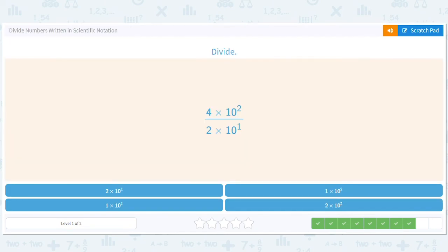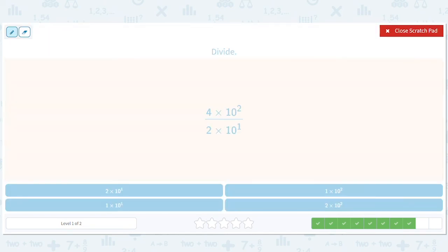All right, how about this guy or gal? This is a general neutral division. We have 4 divided by 2, which is 2. We have 10 squared divided by 10 to the first, which is 2 minus 1 is 1. So that's 2 times 10 to the first.